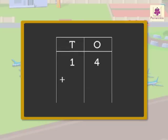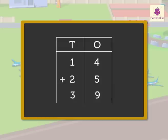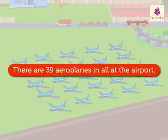We have to add 14 and 25 to find the total number of aeroplanes. First, we add the numbers in the 1s column: 4 and 5. We get the number 9. Now, add the numbers in the 10s column: 1 and 2. We get the number 3. Hence, we get the number 39. There are 39 aeroplanes in all at the airport.